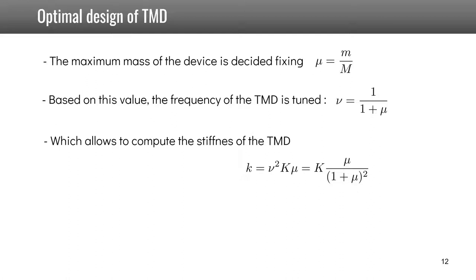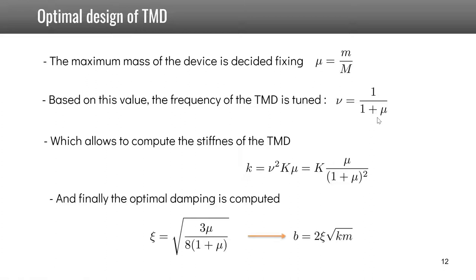This allows you then to compute the stiffness of the TMD, as you already have the mass m, which is given by the following expression. It can be expressed as a function of the stiffness of the primary system and the mass ratio. Finally, the optimal damping is computed also based on the mass ratio to find B.